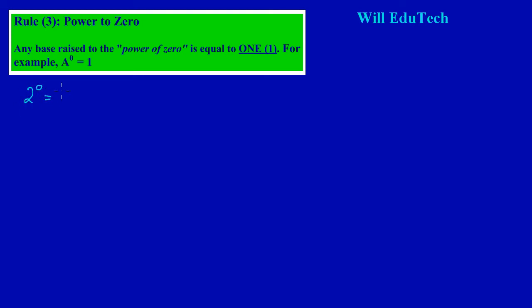For example, if you have a base two raised to the power of zero, the answer would be one. Likewise, if you have a fraction three upon four raised to the power of zero, that would also be equal to one.